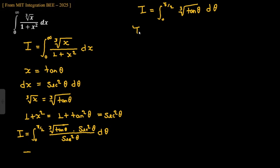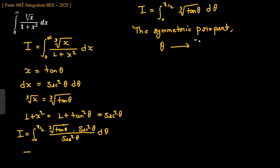Now we use the symmetric property. Replacing θ with π/2 − θ, we have tan(π/2 − θ) = cot θ.